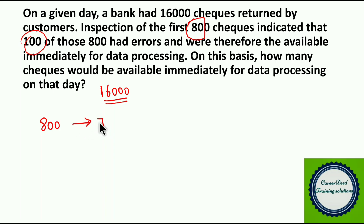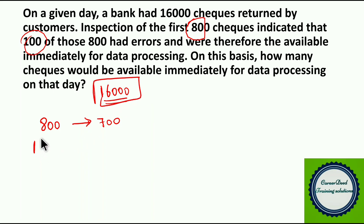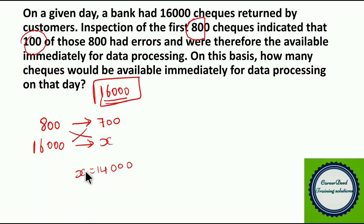The remaining 700 out of 800 are available for processing. Setting up a proportion: for 800 checks, 700 are available; for 16,000 checks, X are available. When you cross multiply, you get X equal to 14,000 checks. So the answer is 14,000 checks will be immediately available for data processing on that day.